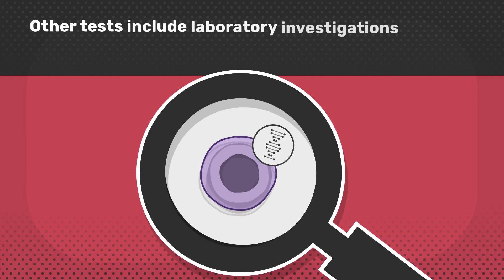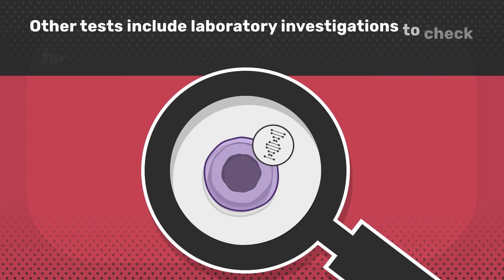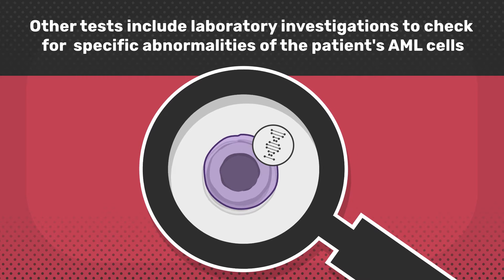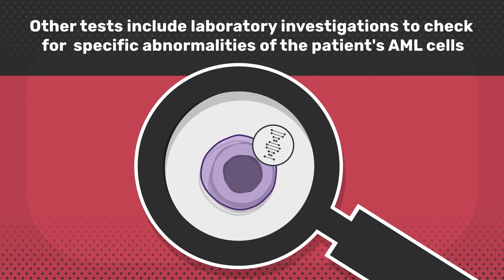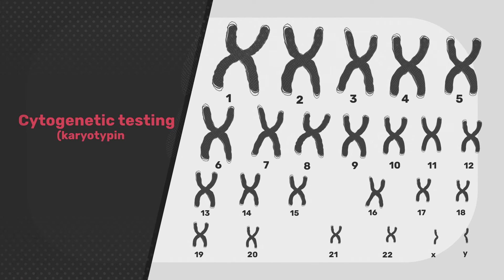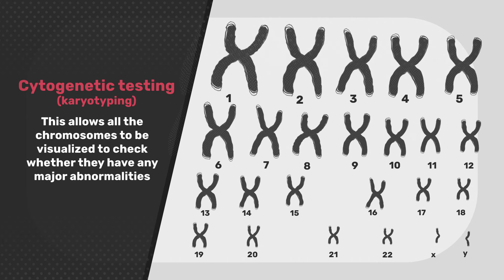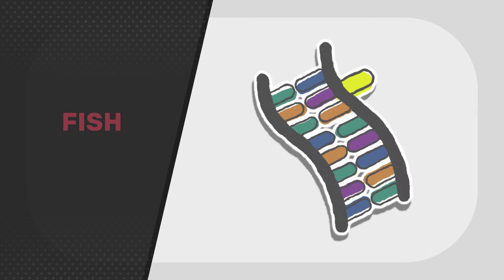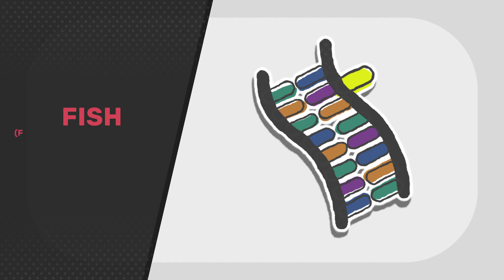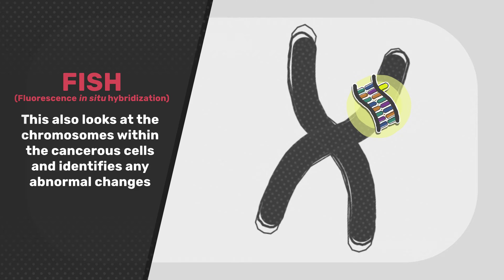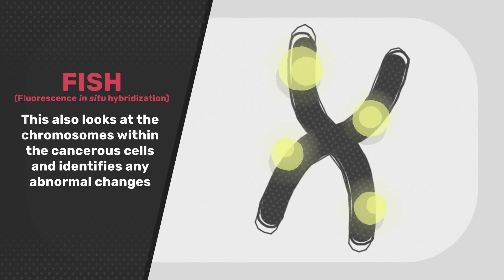Other tests that may be done include laboratory investigations to check for specific abnormalities of the patient's AML cells. These tests can include cytogenetic testing, also known as karyotyping, which allows all the chromosomes to be visualised to check whether they have any major abnormalities. FISH, which is short for fluorescence in situ hybridisation, also looks at the chromosomes within the cancerous cells and identifies any abnormal changes.